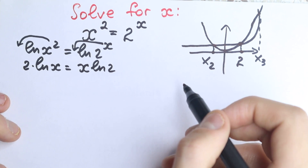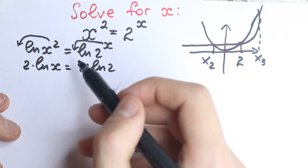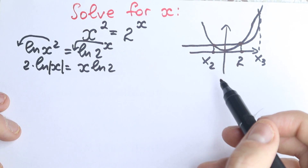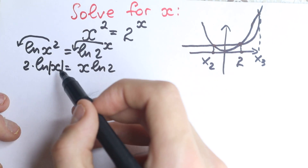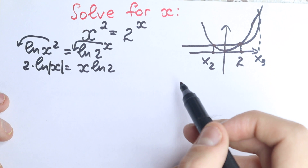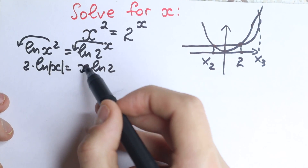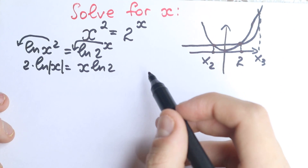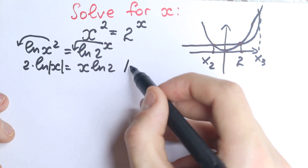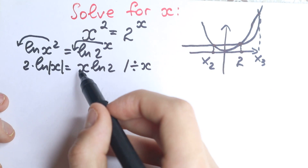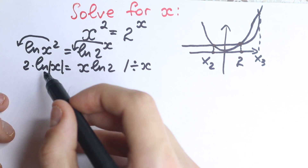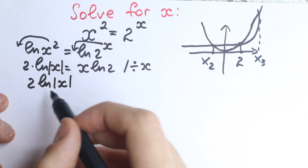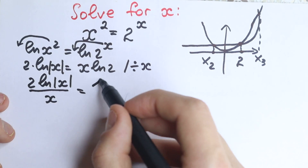One really important moment most students forget: we have x squared, so x can be positive or negative, so we need to put absolute value right here. Now we have constants and variables on both sides, so let's group constants on the left and variables on the right by dividing both sides by x, giving us 2 times natural log |x| over x equals natural log 2.